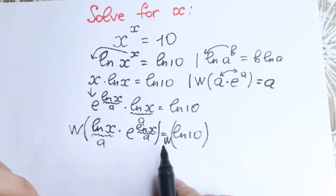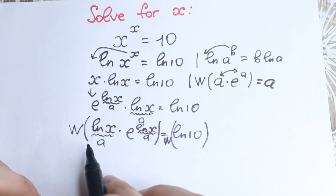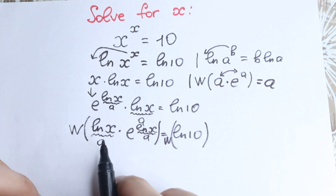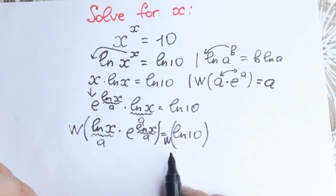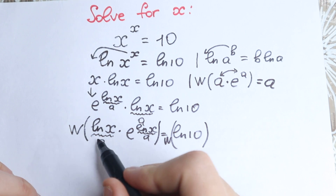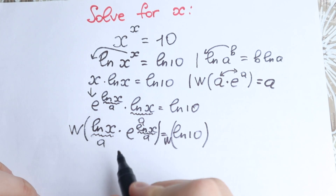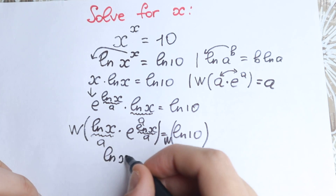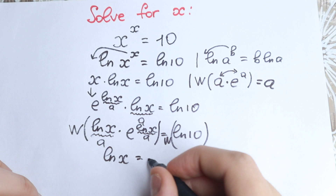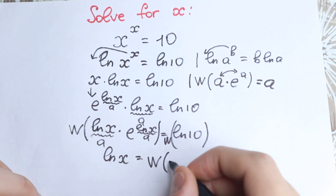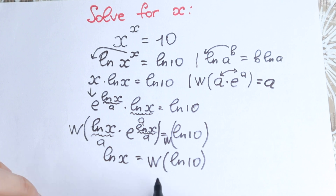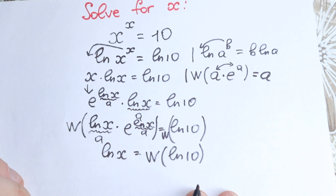We need to do absolutely the same thing on the left and on the right — just like square root on the left means square root on the right. Lambert W function applied to this expression gives us only our a. In our case a equals natural log x, so we get natural log x equal to Lambert W function of natural log 10, which is our constant on the right hand side.